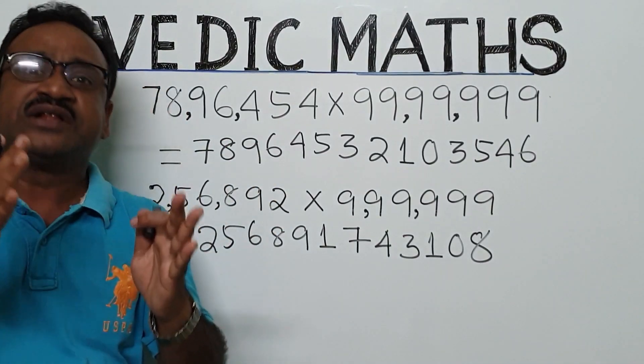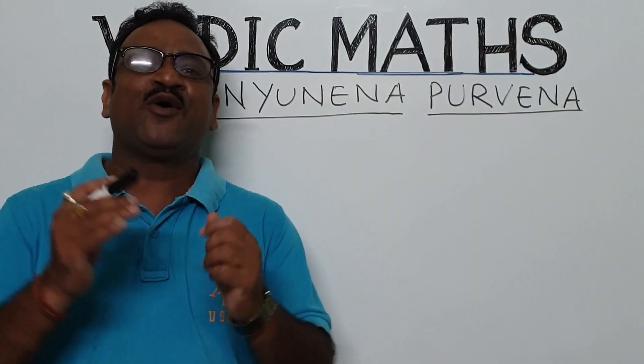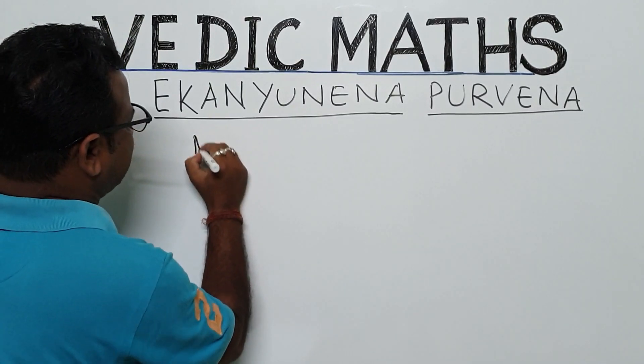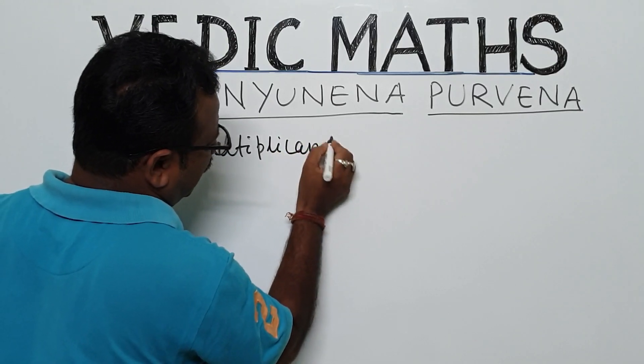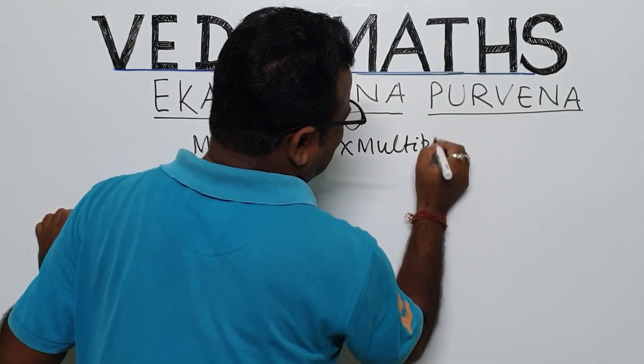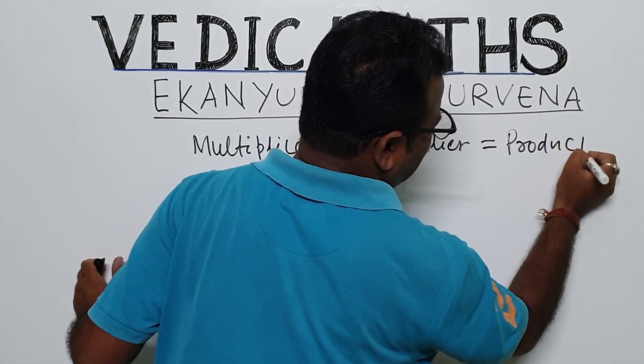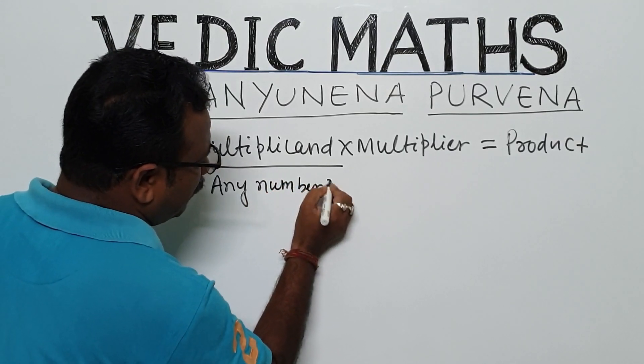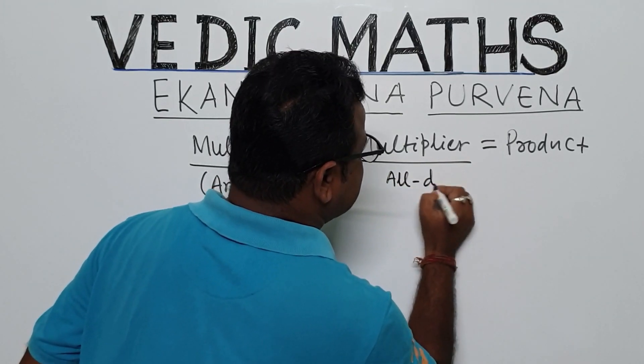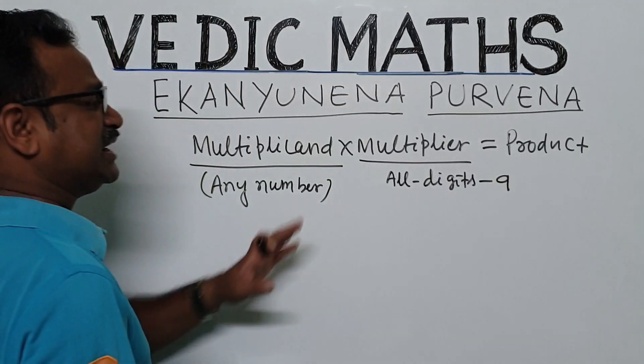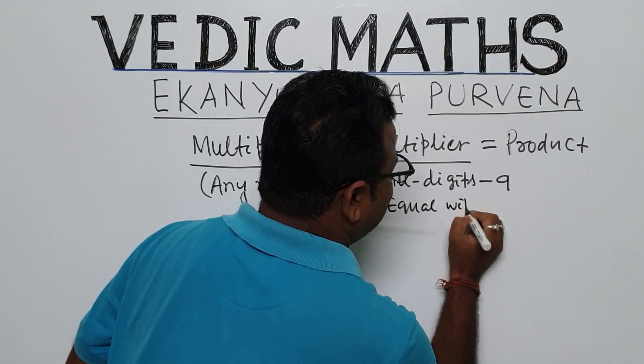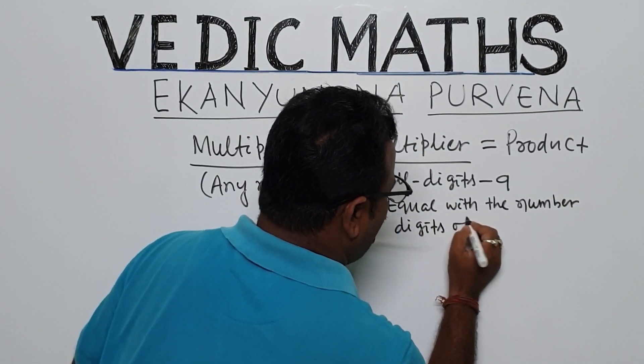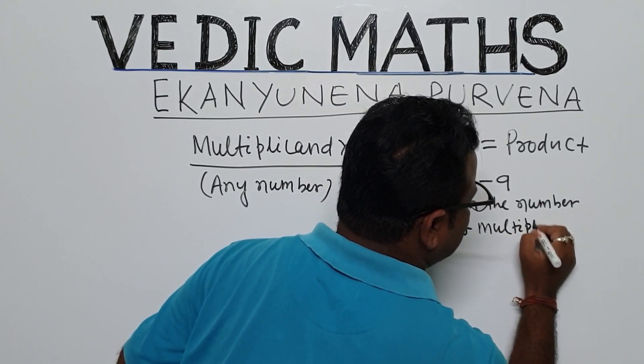We will discuss in detail about the trick, the sutra of Vedic math, Ekanyunyena Purveno, one by one. Now we will detail discuss about the sutra Ekanyunyena Purveno. As we know, multiplicand into multiplier is equal to your product. Here, multiplicand can be any number, and multiplier all digits 9, equal with the number of digits of multiplicand.